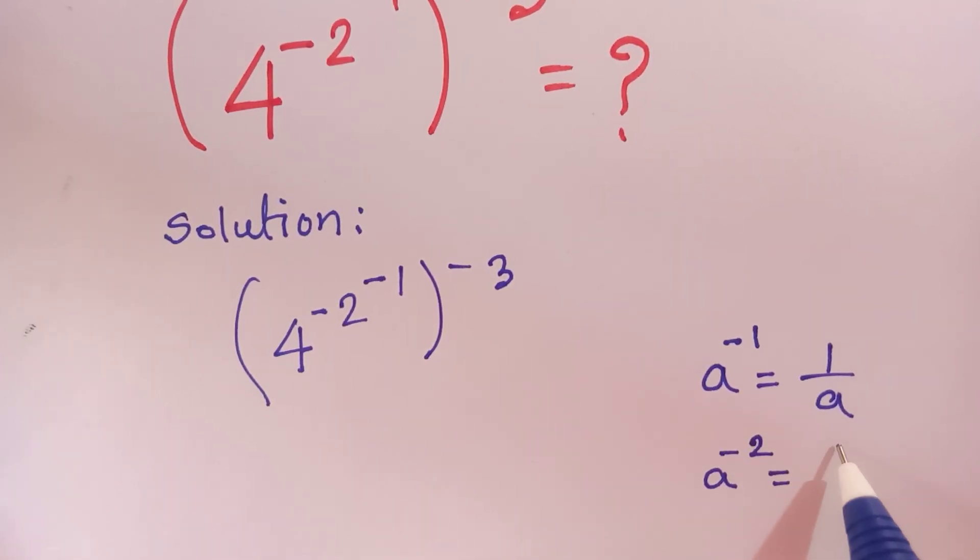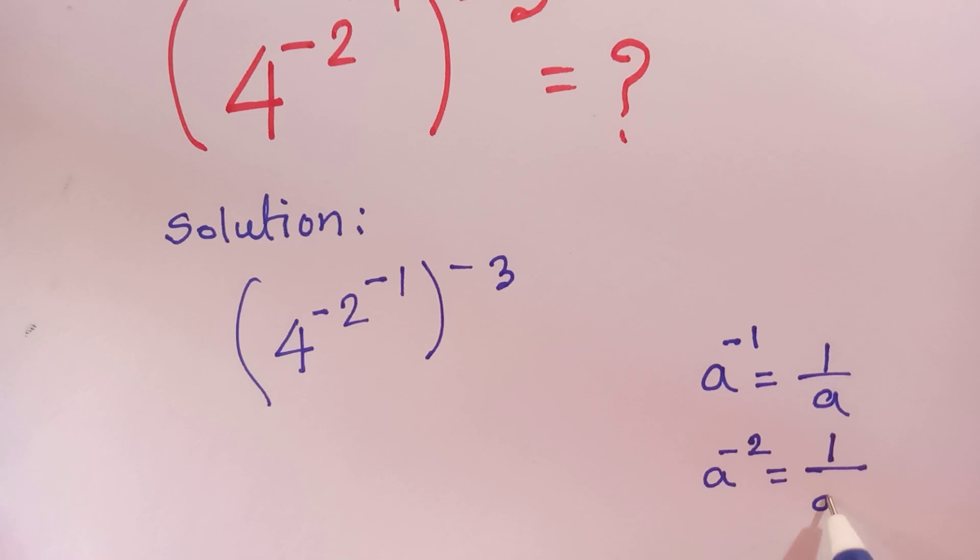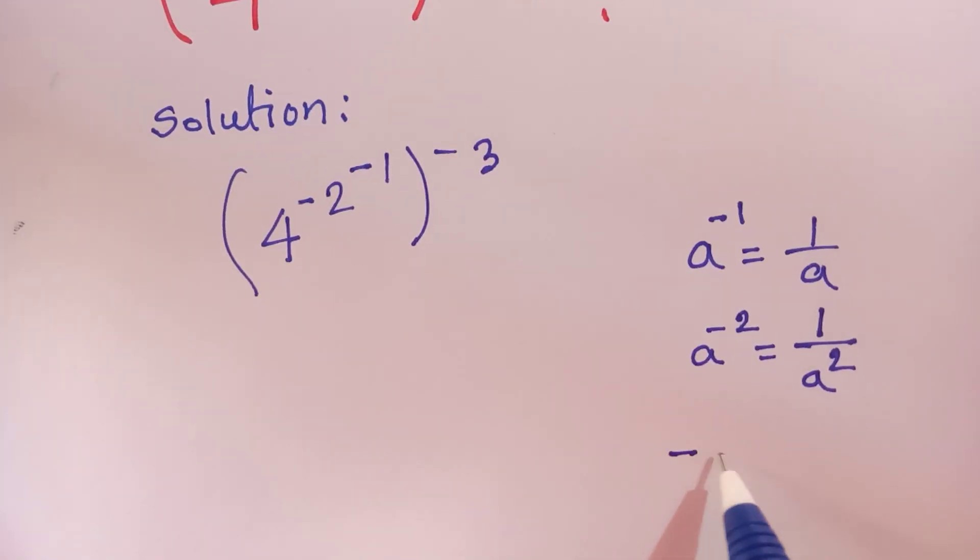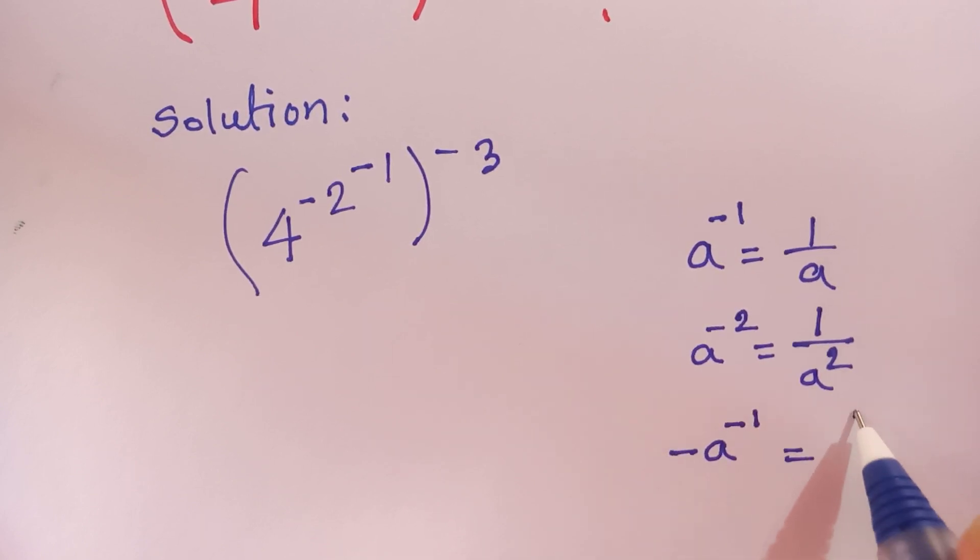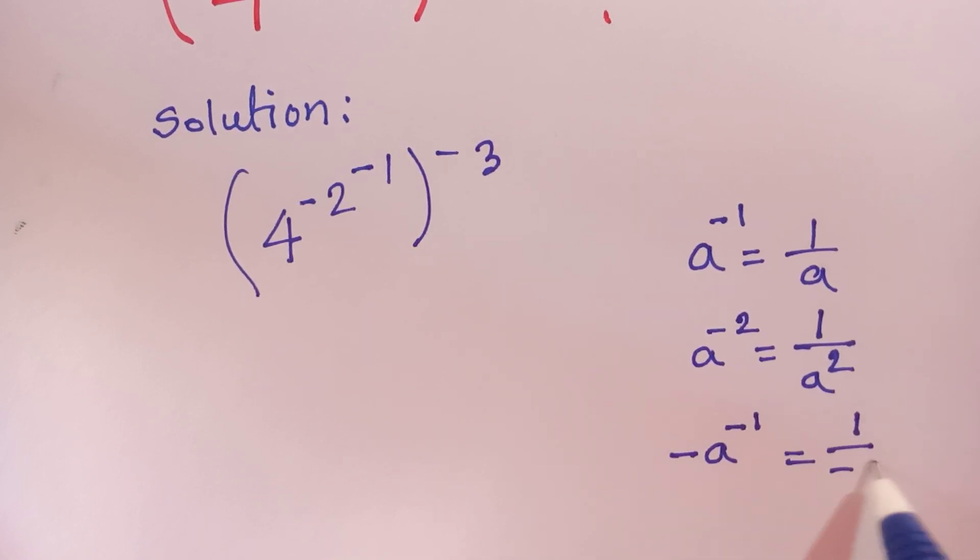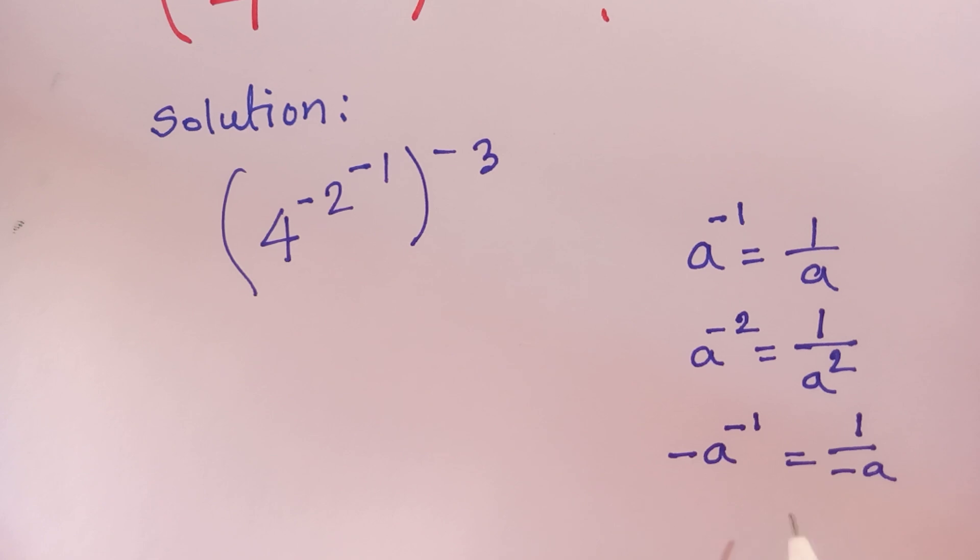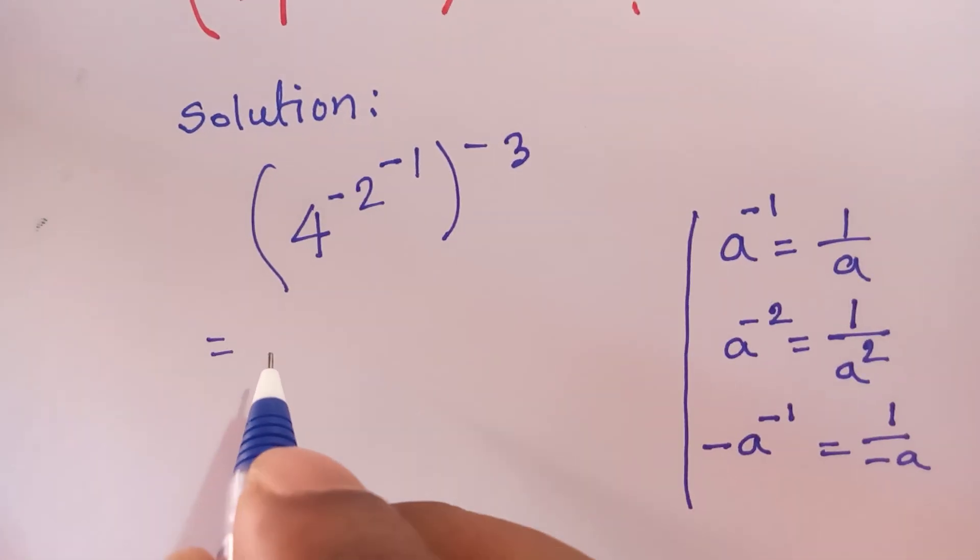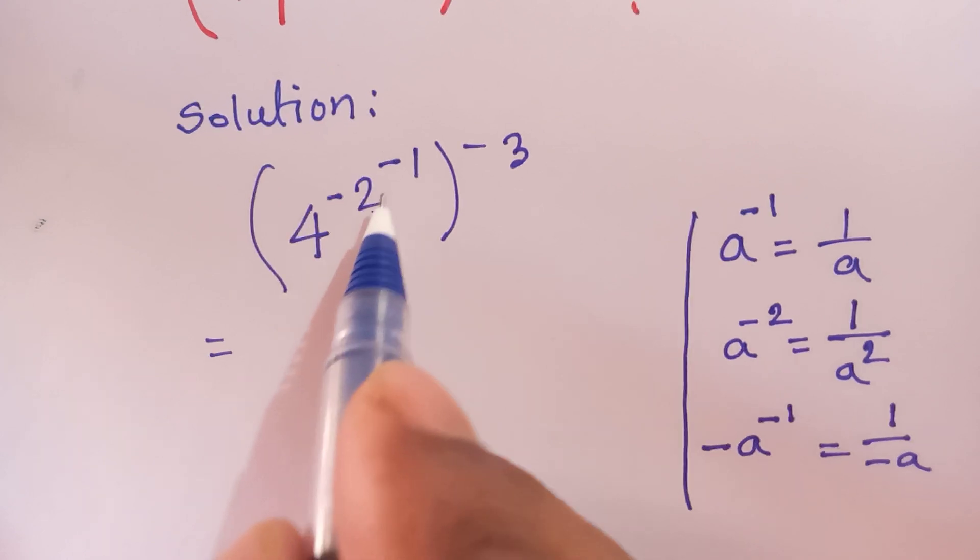And -a^(-1) is equal to 1 over -a. So according to this formula, we can write in this case -2^(-1).